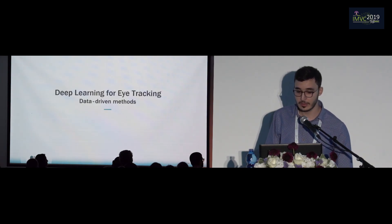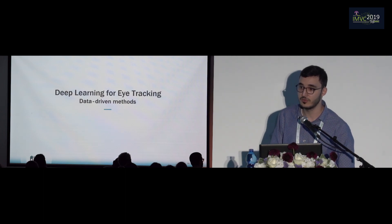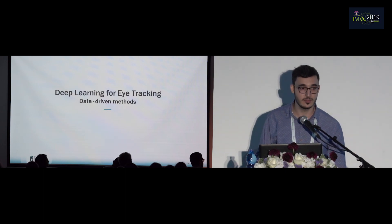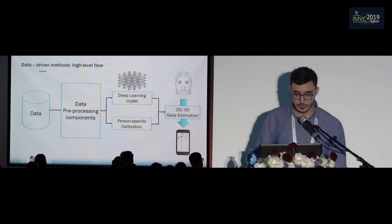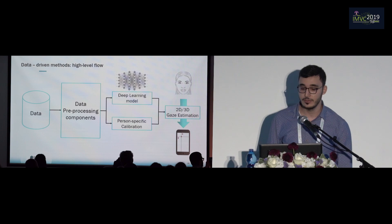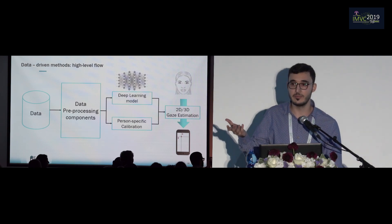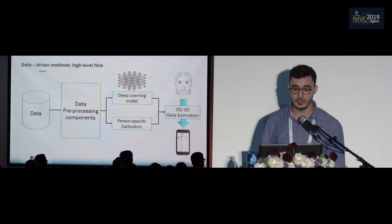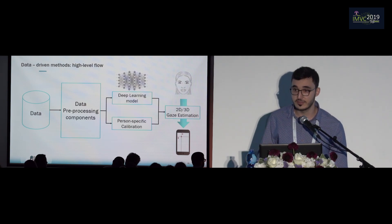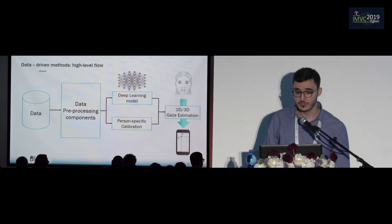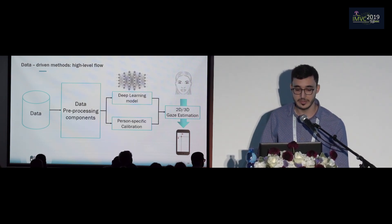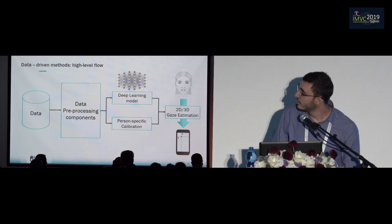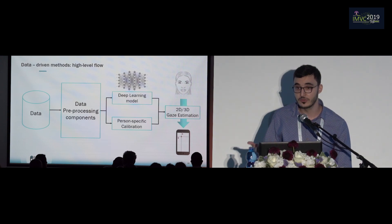Given this knowledge about the geometry and physiology of the eye, we now want to see how we can use it in data-driven methods. As you can expect from a data-driven flow, you start by having some data — in our case, images — which are fed into pre-processing components such as face detection and head pose estimation. You then feed this data into your deep learning model, for example a CNN. After training this model using huge amounts of data, you hope to be able to estimate the 2D or 3D gaze point.